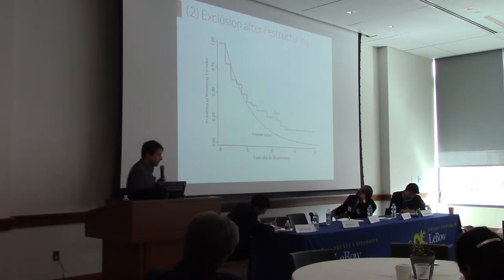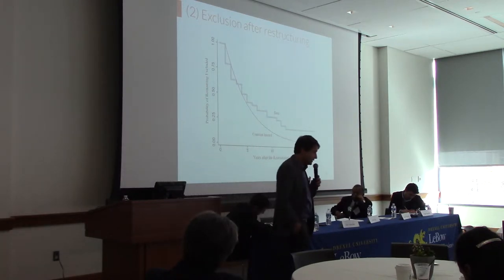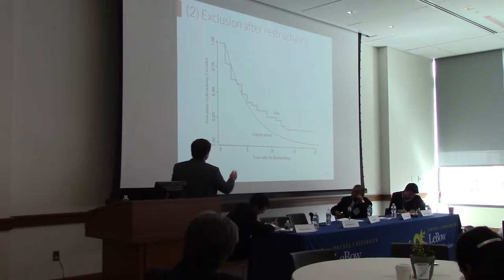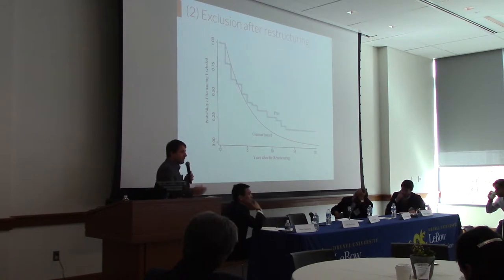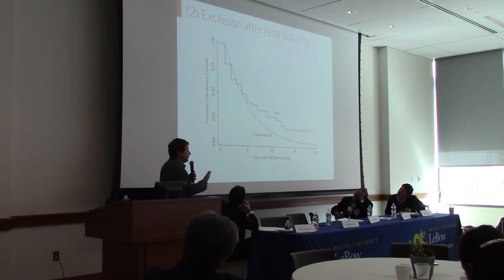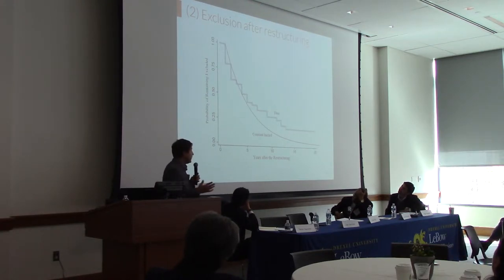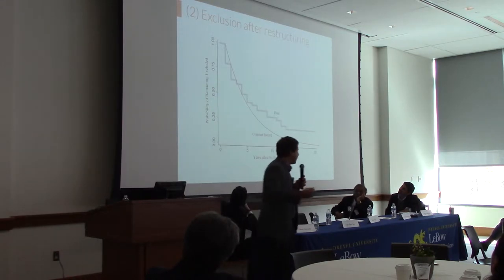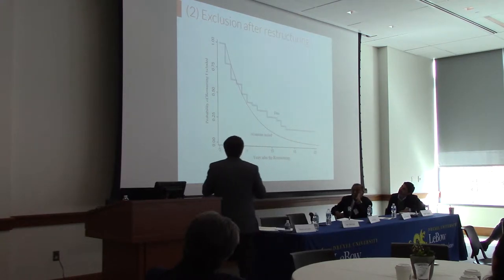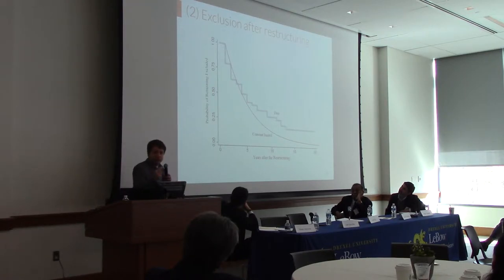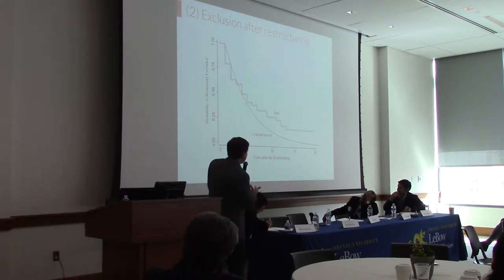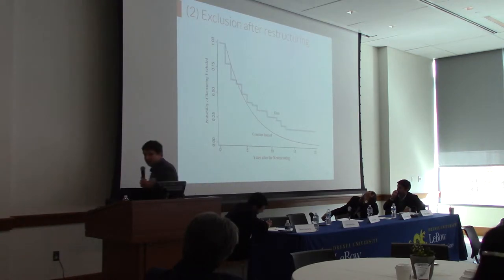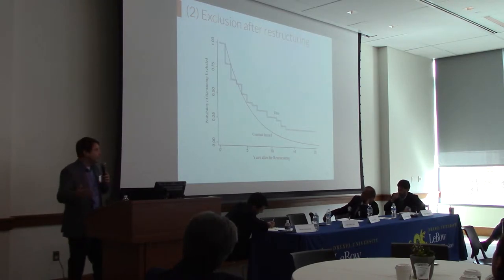The second point concerns market exclusion. From Cruces and Trevesh in the AER 2013, they estimate the probability of remaining excluded from credit markets. The probability of remaining excluded is very high — one year, two years after restructuring. If you assign a 75% probability of being excluded next year, and 75% from year to year, that red line matches the data closely and is even conservative after five years.